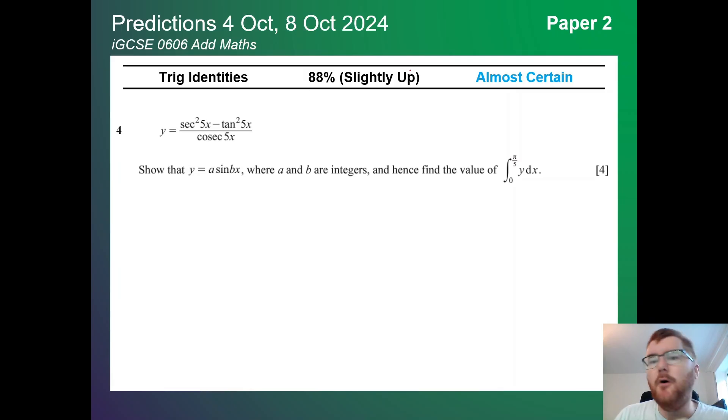Trig identities slightly up on paper 2 here at 88%. My commentary on paper 1 is very similar to what it is on paper 2, which is you need to be able to work with those identities. Notice here they've sneaked in a bit of integration as well. This is one of the key differences between the standard maths courses and the ad maths courses. They are much more likely to mix and match topics within one question.